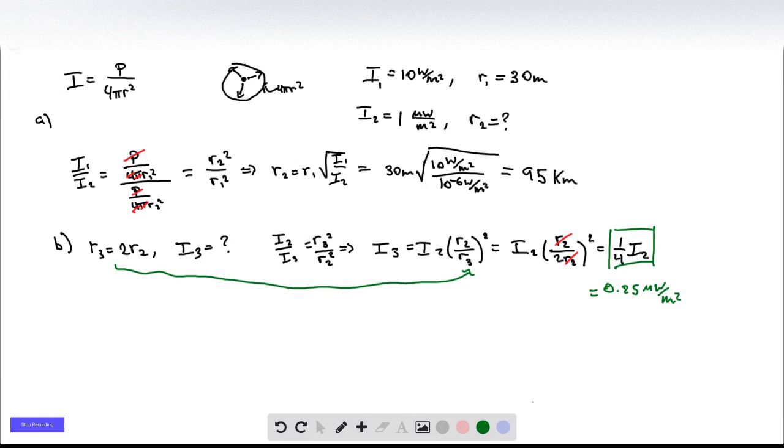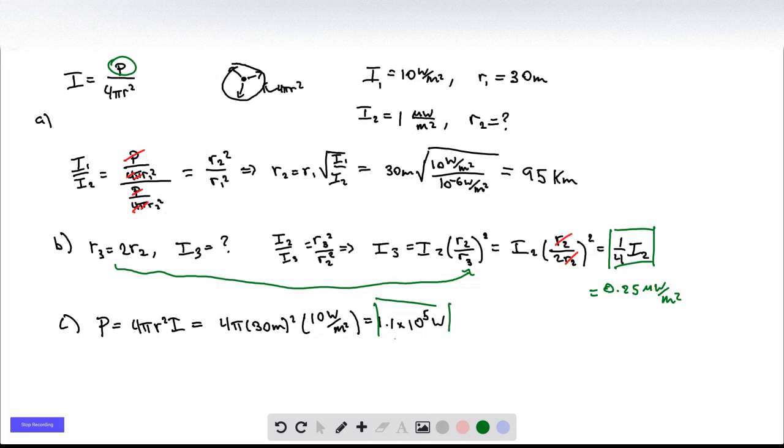Great. Finally, we want to know what is the power that the jet produces at takeoff. So we want to find P for part C. So we just know that I is P over four pi R squared. So we'll say that P is equal to four pi R squared times I. And we know the intensity is 10 watts per meter squared when R is 30 meters. So we'll just plug in those numbers here, and we get a final numerical answer of 1.1 times 10 to the 5 watts. And that's our final answer.